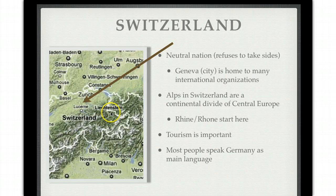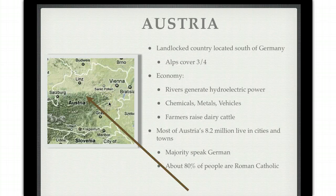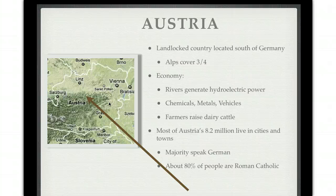Austria is a landlocked country south of Germany, and the Alps cover about three quarters of it. Its economy is based on a few things: rivers generate a lot of hydroelectric power, and there are also chemicals, metals, and vehicle or auto industries. Farmers raise dairy cattle here. Most of Austria's 8.2 million people live in cities and towns, and about 80% are Roman Catholic.